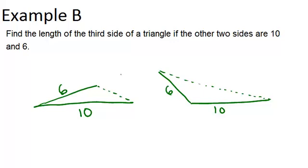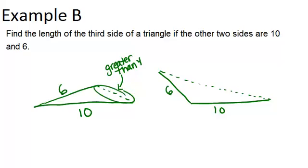For the lower constraint, this side has to be greater than 4. Because if it was less than 4, then it would add up with 6 to be a number less than 10. So this side has to add up with 6 to be greater than 10 — that's why it has to be greater than 4.